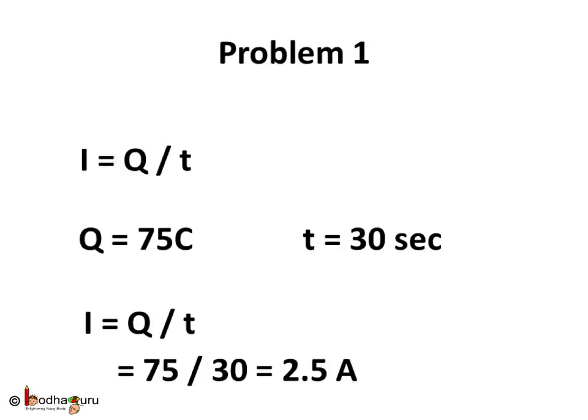We know I is equal to Q by T. We are given Q equals 75 coulombs and it flows in time T in 30 seconds. We need to find I. So I equals Q by T which is equal to 75 by 30 which equals 2.5 amps. So 2.5 ampere of electric current is passing through the heater circuit.